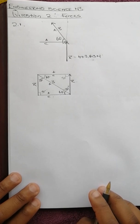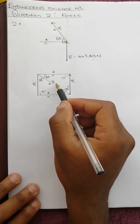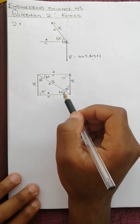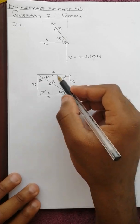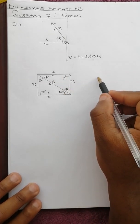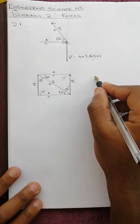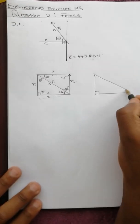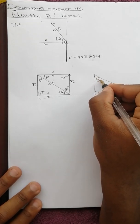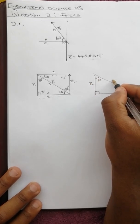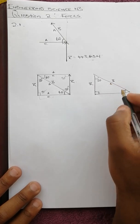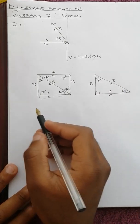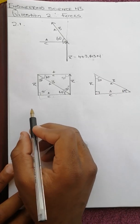Now we are looking for AB and AC. We can isolate one of the triangles from this parallelogram. Isolating this triangle, it would have a 90-degree angle, 60 degrees, and 30 degrees. This side is AB and this side is AC.